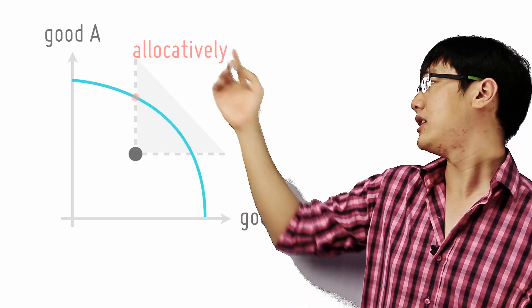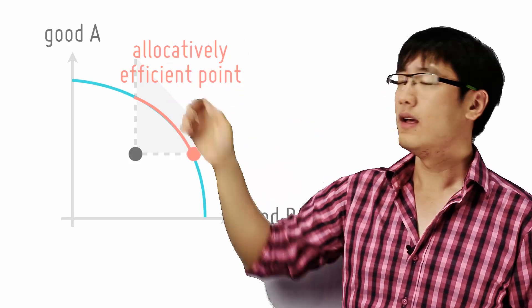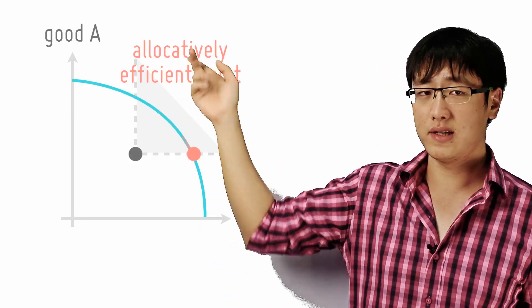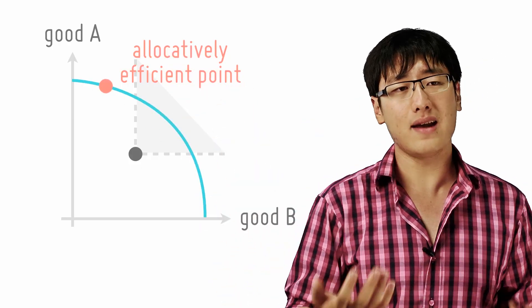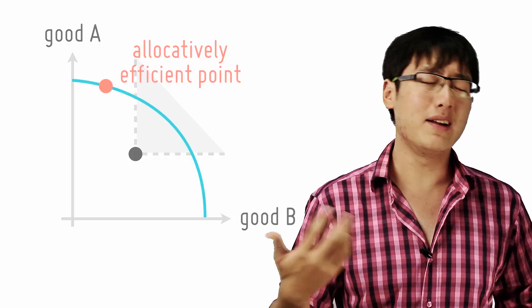And it is good if the Allocatively Efficient point is within this quadrant, but what if it isn't? What if it's somewhere around here? Then it won't be Pareto efficient but it is Allocatively Efficient.